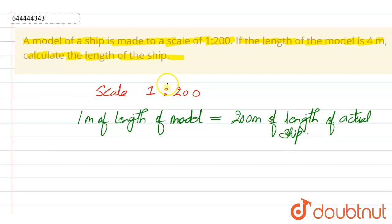We are making a model. So, scale of model is 1 ratio 200.